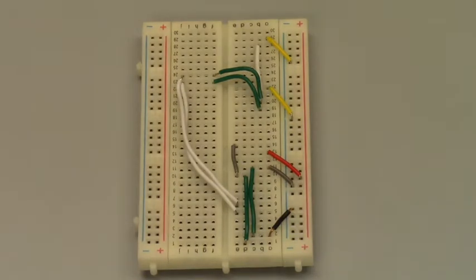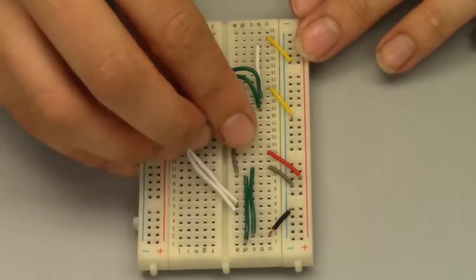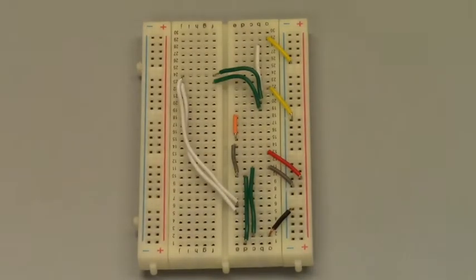Continuing down the breadboard, you're going to cut two small pieces of wires for the following, E21 to F21, E22 to F22, and use a slightly longer wire for E30 to F27.